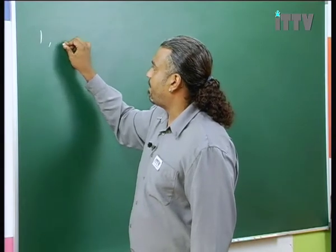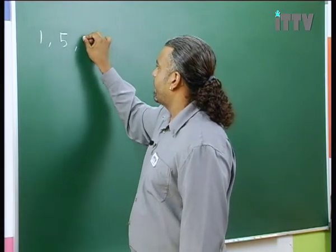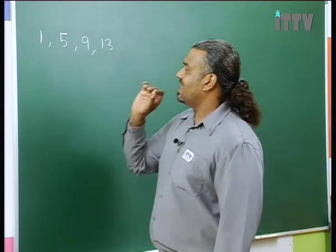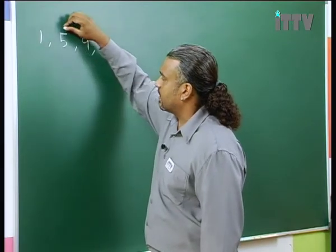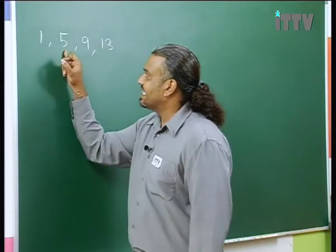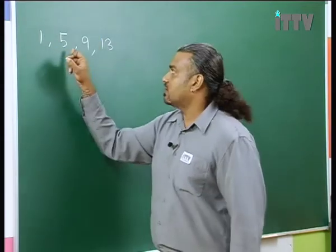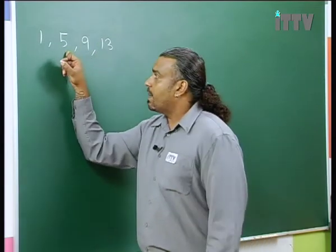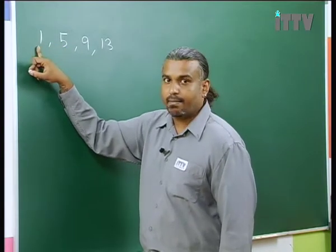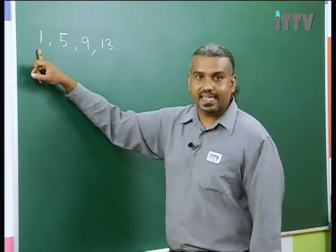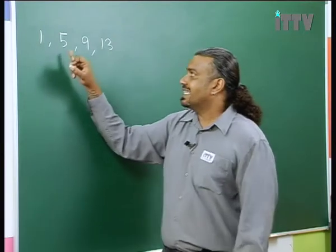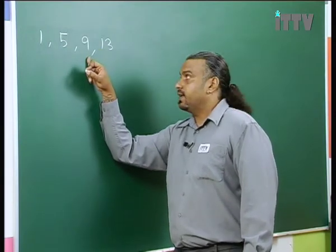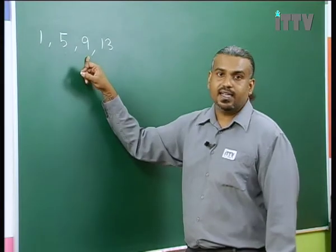Say suppose I give you a pattern 1, 5, 9, 13 and so on. Let's focus on the number 5. There is a term to the left of number 5, and there is also a term to the right of number 5. The term before the number is known as the preceding term. The term that comes right after — so the term that comes after 9 — is known as the succeeding term.